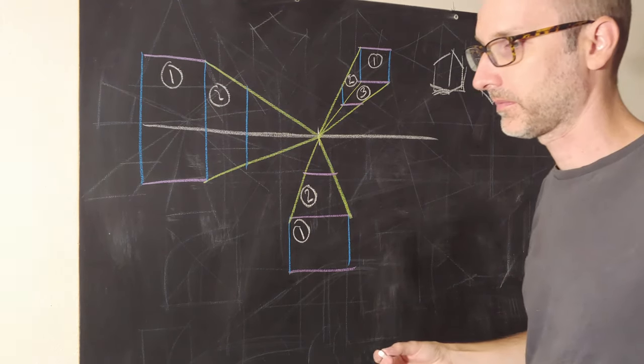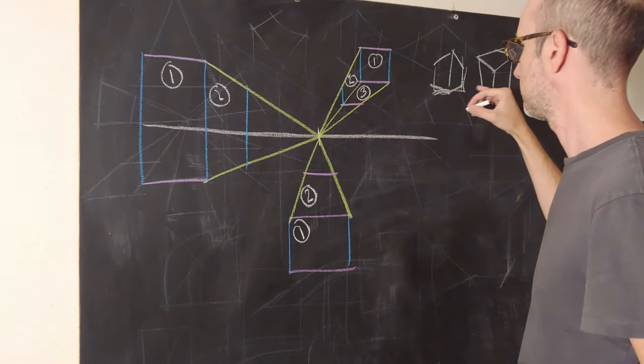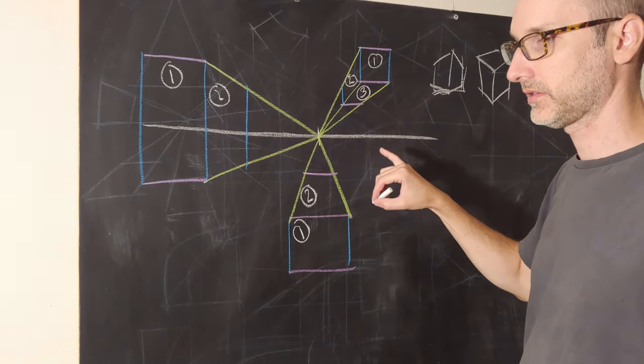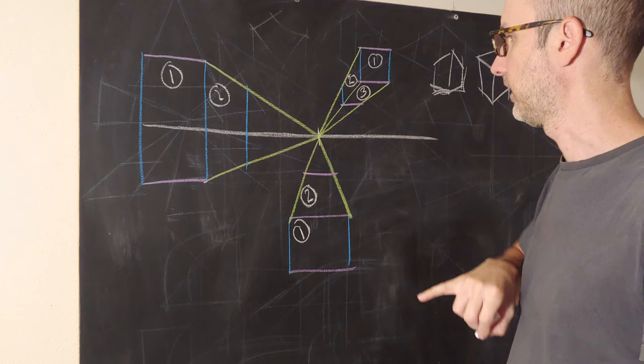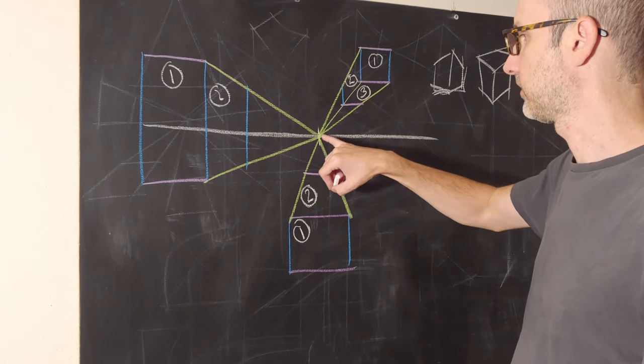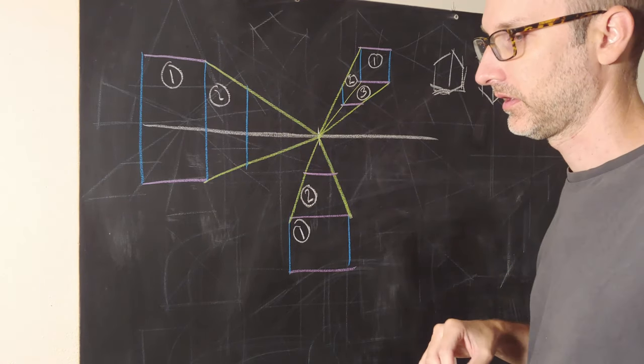And essentially, all we're doing is we're just integrating these boxes into a single space, right? And the way that we do that is by making all of our triangles converge at that single vanishing point.